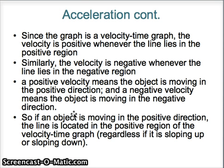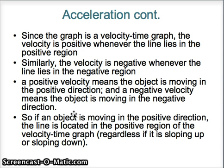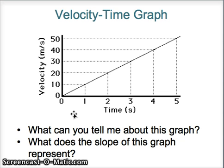The graph previously shown was a velocity-time graph. We know that this graph has a positive slope, and since this graph is in the positive region, we have a pretty clear understanding of what that means. The y-axis is positive — 10 meters per second, 20 meters per second, 30 meters per second, 40, 50 — all positive because the line is in the positive region.